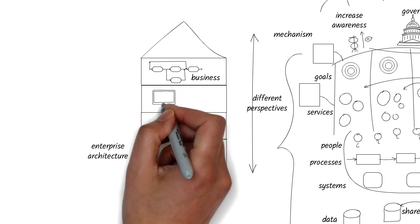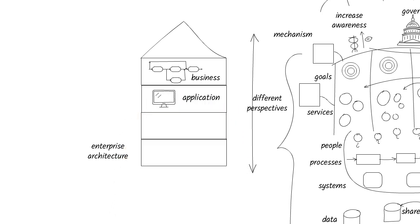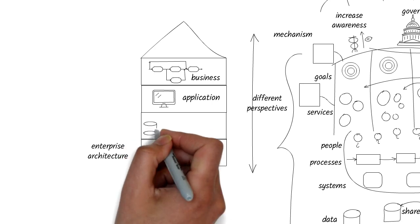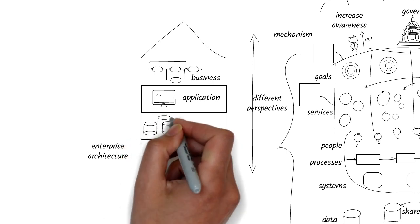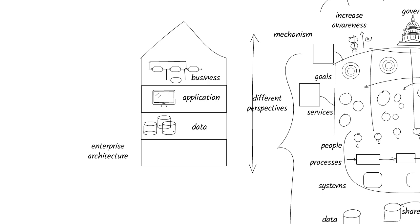The application architecture defines software solutions designed to enable the business. The data architecture identifies the data sources required to support the business, and defines how data is stored, managed, and used in information systems.